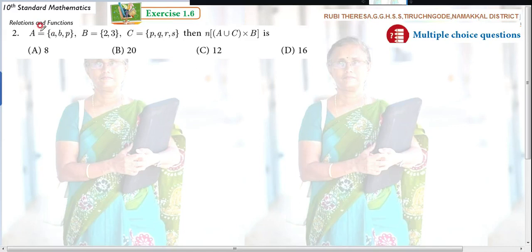Now listen here. A equal to A, B, P. B equal to 2, 3. C equal to P, Q, R, S.